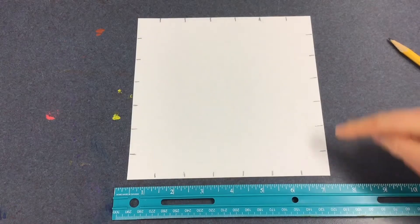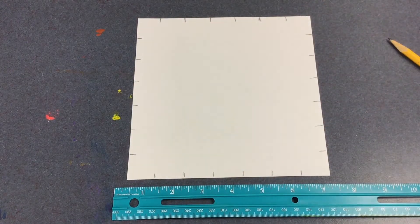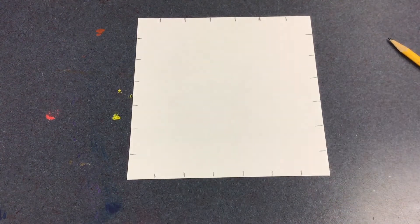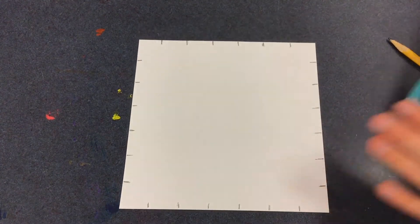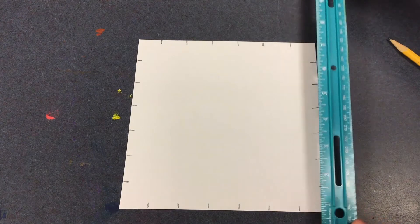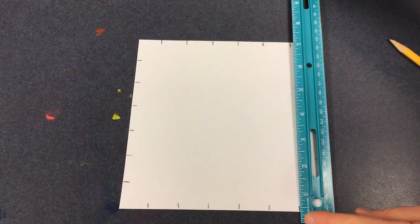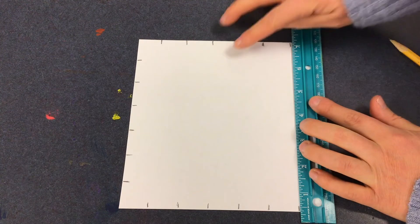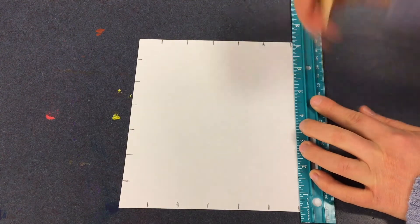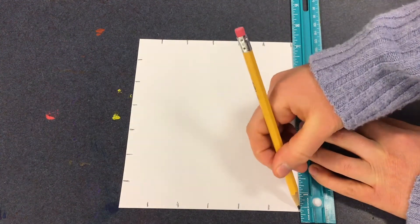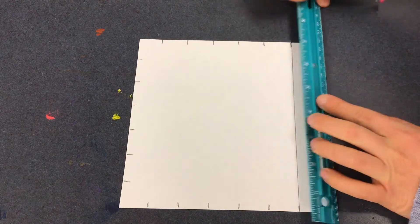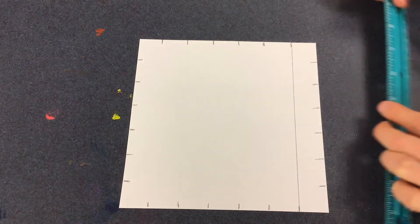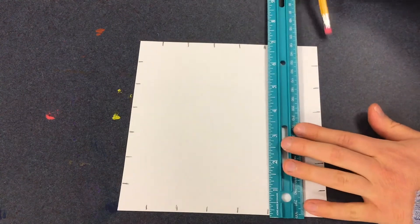Once you have drawn lines one inch apart along all four edges of the paper, you will now begin to connect them with straight lines. Match your ruler up against two lines that are across from each other. Then use the ruler as a straight edge to help you draw a straight line connecting them. Do this all the way across the paper.